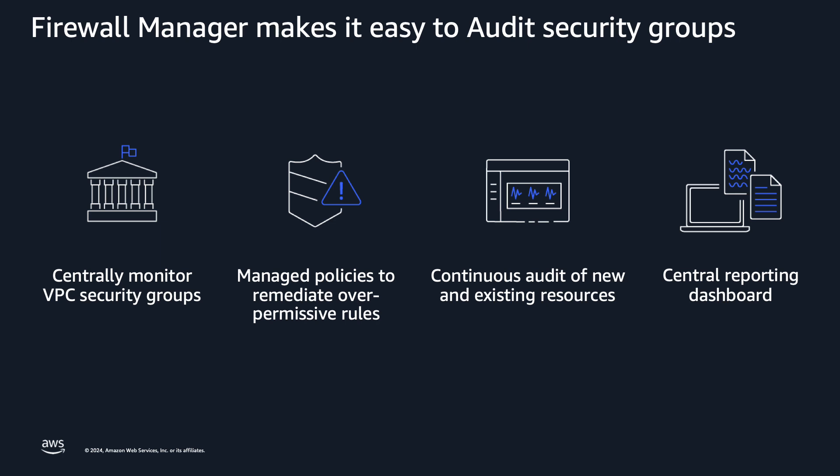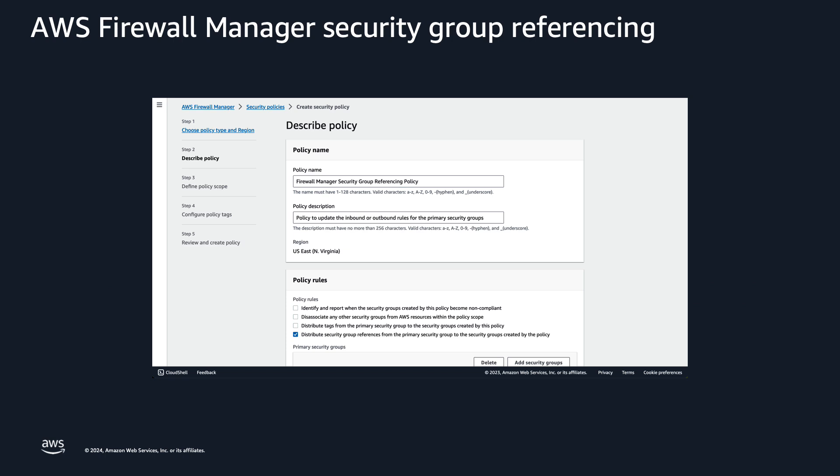You can use AWS Firewall Manager security group policies to manage Amazon Virtual Private Cloud security groups for your organization and AWS Organizations. You can apply centrally controlled security group policies to your entire organization or to a select subset of your accounts and resources. You can monitor and manage the security group policies in use in your organization with auditing and usage security group policies. AWS Firewall Manager support for referencing of security groups provides the ability to update the inbound or outbound rules for Firewall Manager's primary security groups to reference security groups in the peer VPC, allowing traffic to flow to and from instances associated with the referenced security group in the peer VPC.